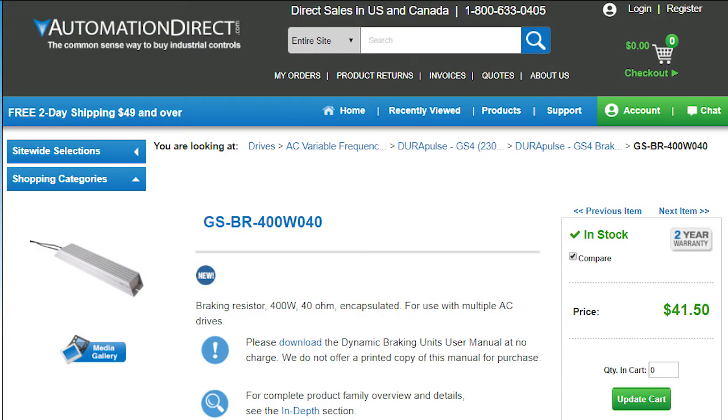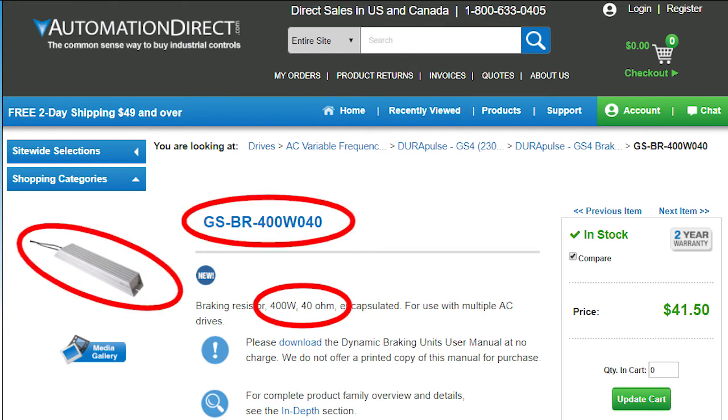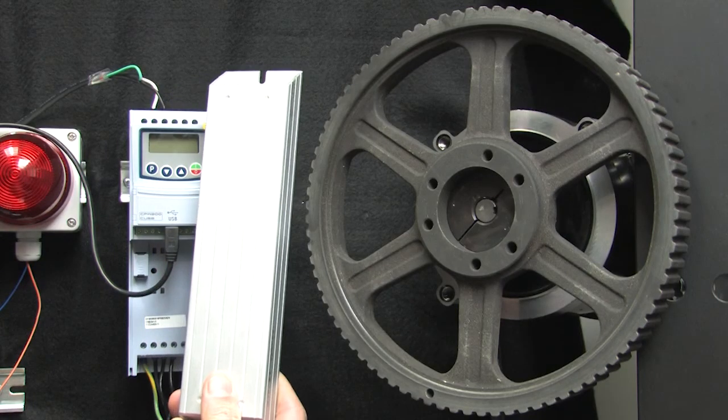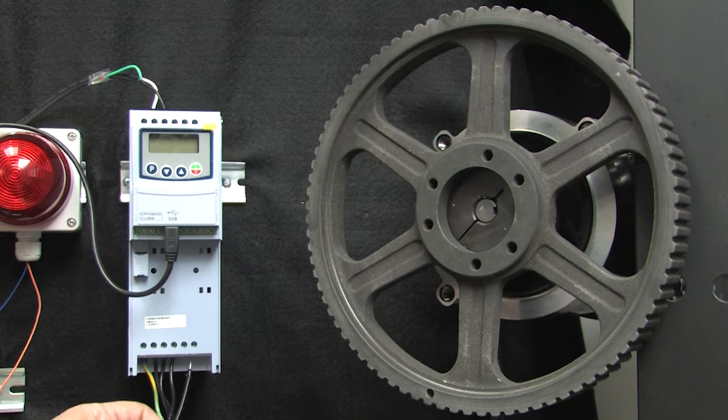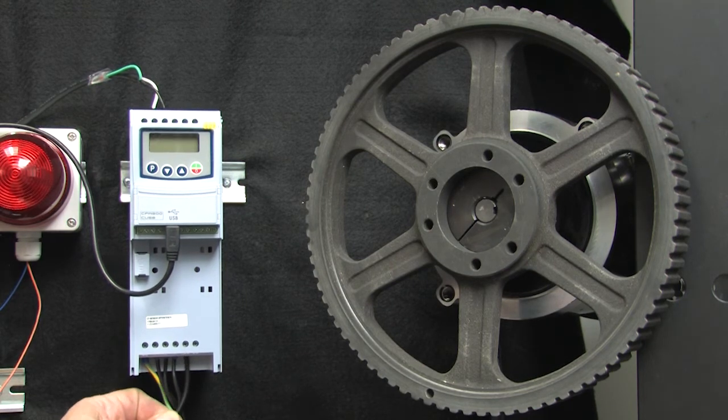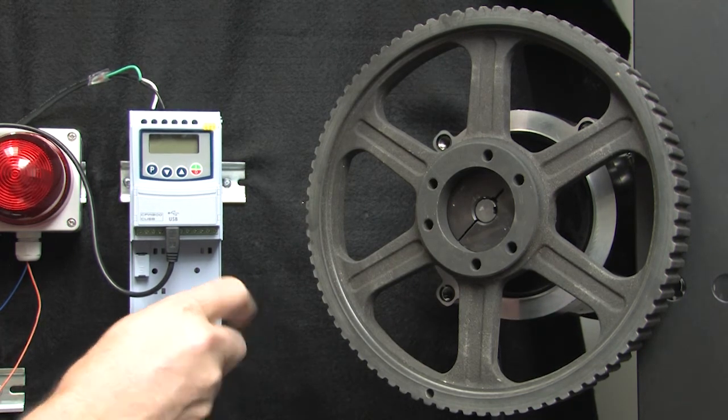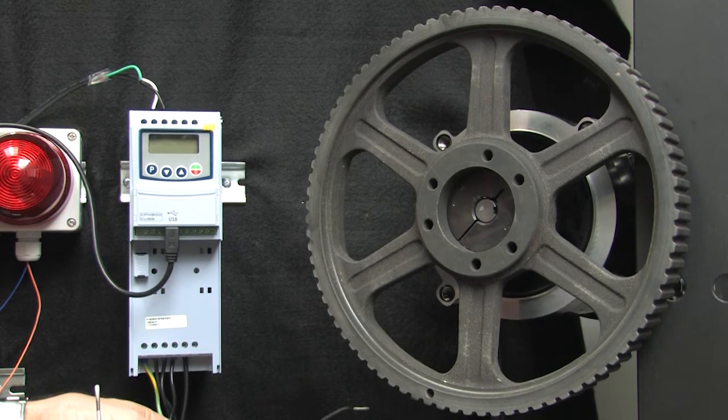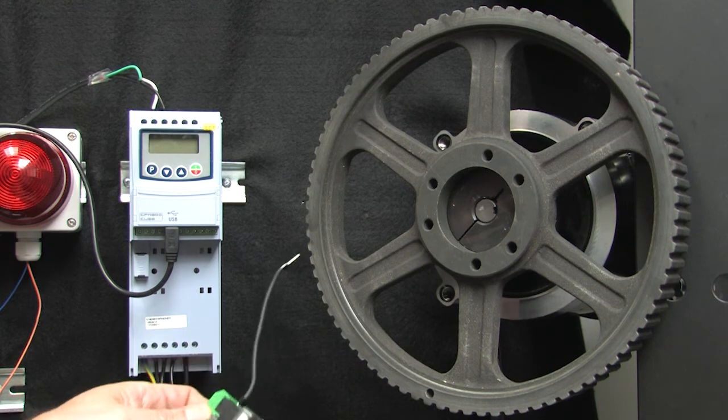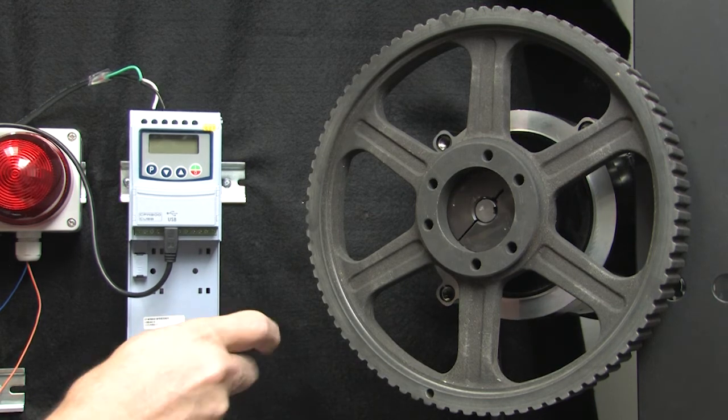So, I went and searched the AutomationDirect website for a 400 watt 40 ohm resistor and found this guy. Exactly what we need. Again, I'm doing this in my office so I'm just going to let it dangle here, but in a real application you would want to mount the braking resistor to a really good heat sink, usually the largest piece of metal you can find. I also added a switch in series with the resistor so we can quickly switch it in and out for our demo.